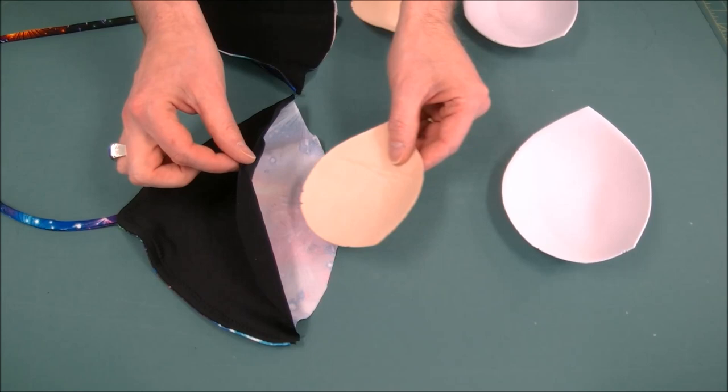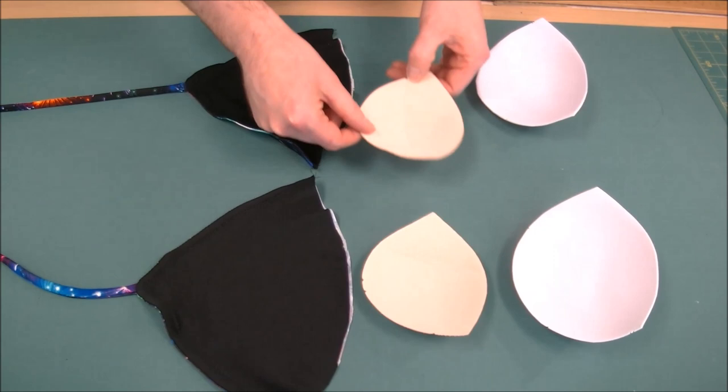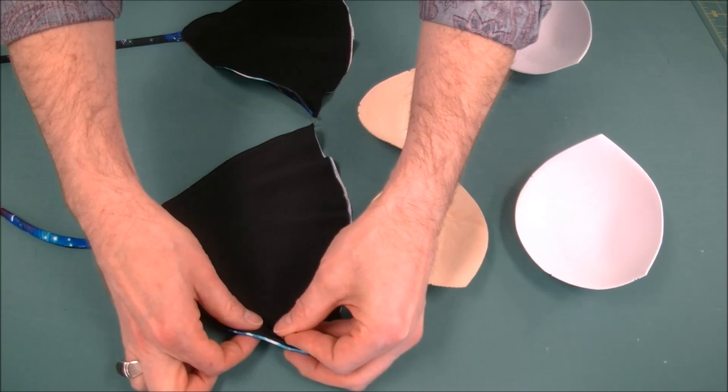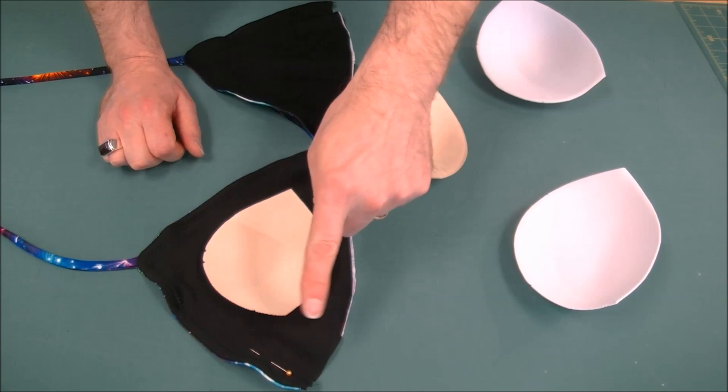While the bottom edge is still open, you can slide the bra form in. You'll find that there's little notches in the forms and these are indicating the outside of the body, more towards the underarm. Make sure that you indicate with a pin which is the left and right side of your suit so that once it's done and you put the casing in, it will be correct.